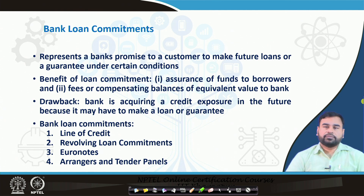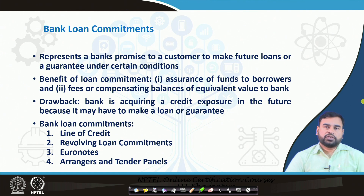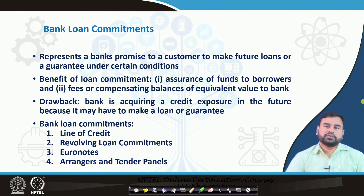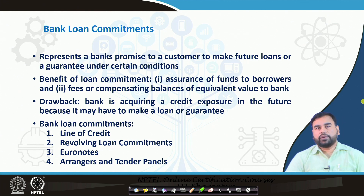There are different kinds of commitments the bank can make: the line of credit, revolving loan commitments, euro notes, and also a concept called arrangers or tender panels. These are the different kinds of commitments or different ways commitments have been made by the bank to provide this kind of guarantee to the customer.